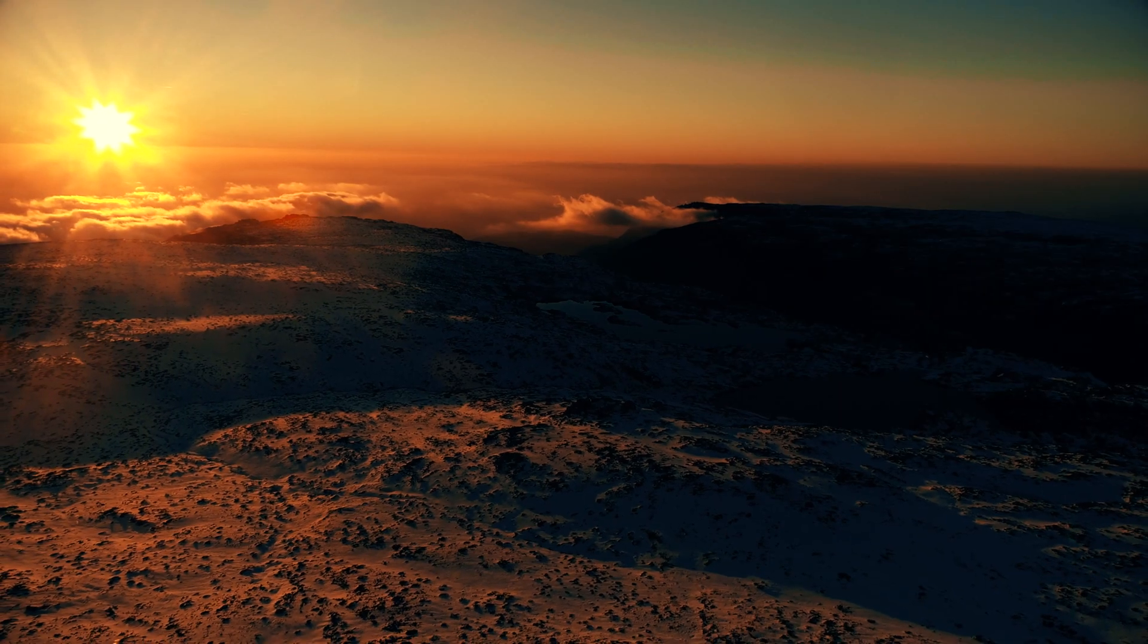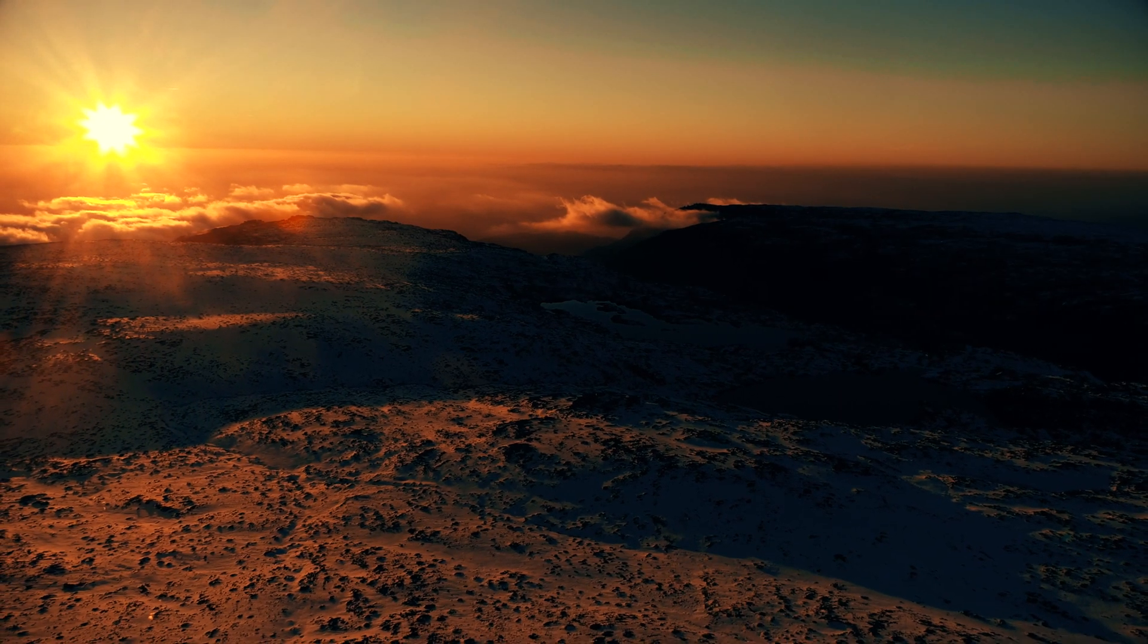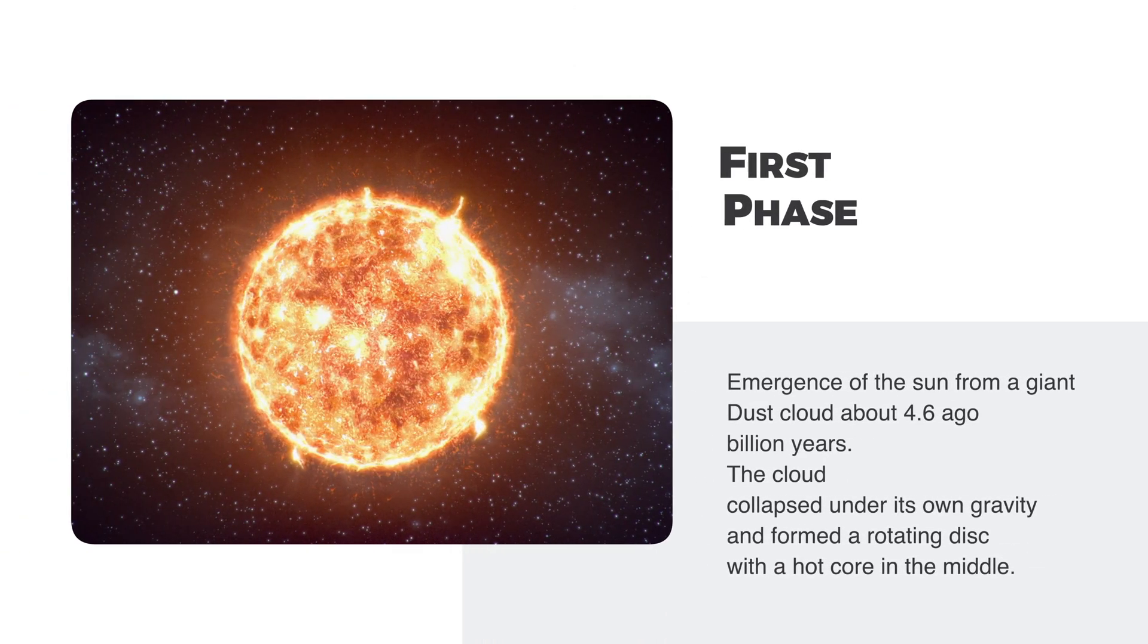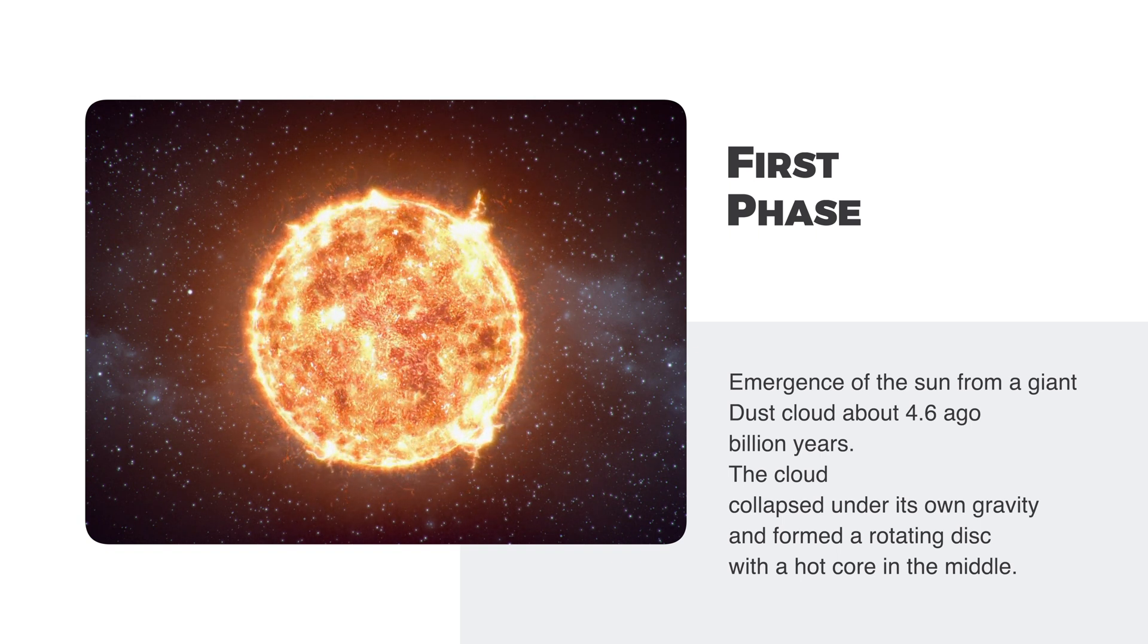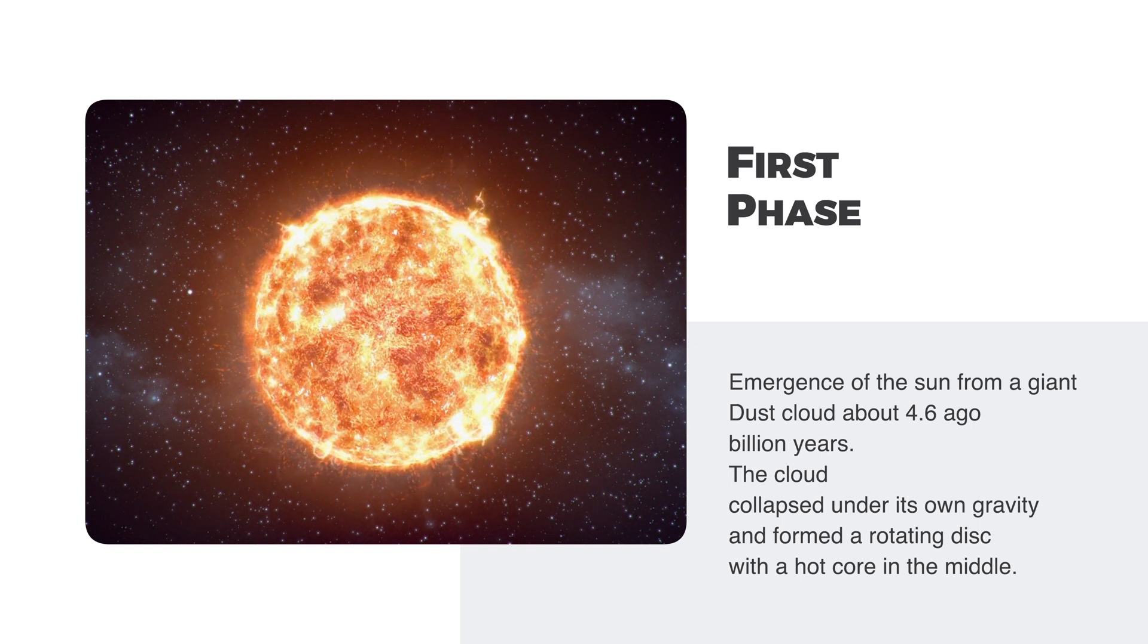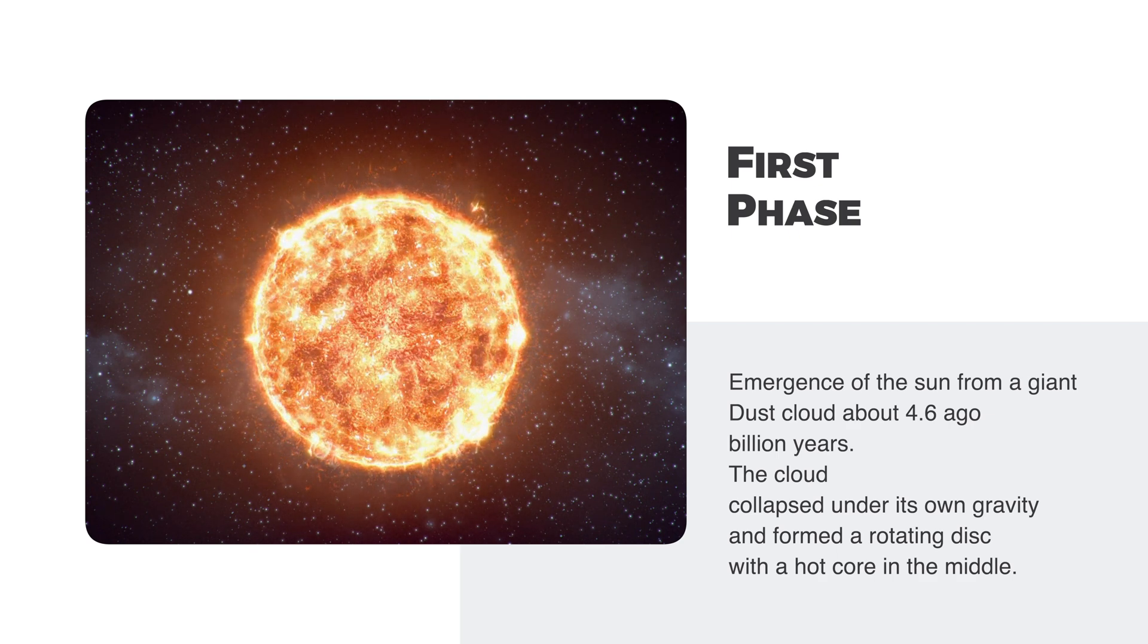The evolution of the Sun can be divided into several phases. The first phase was the formation of the Sun from a giant cloud of dust about 4.6 billion years ago. The cloud collapsed under its own gravity and formed a rotating disk with a hot core in the center.